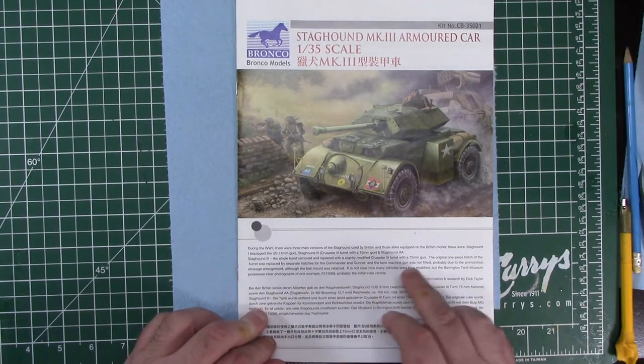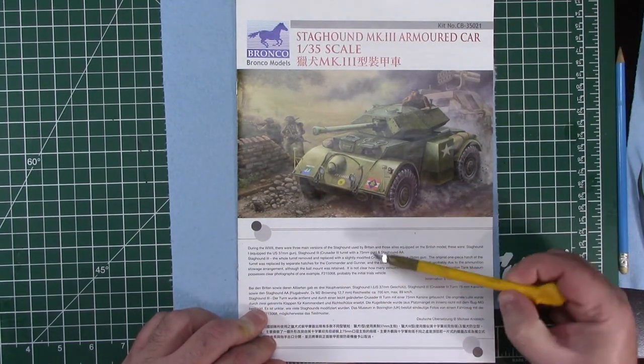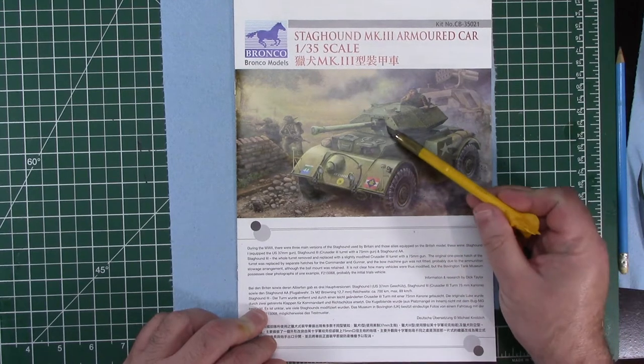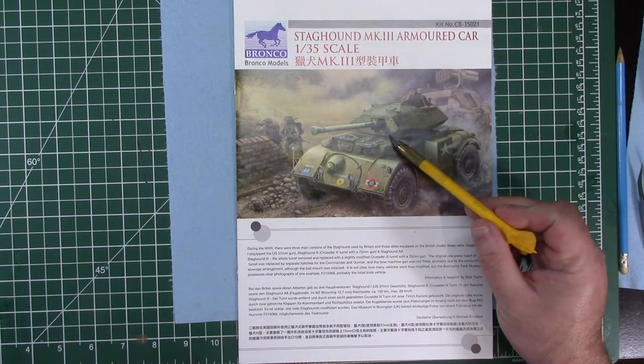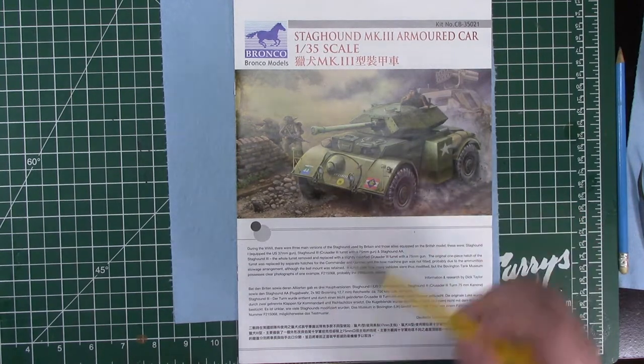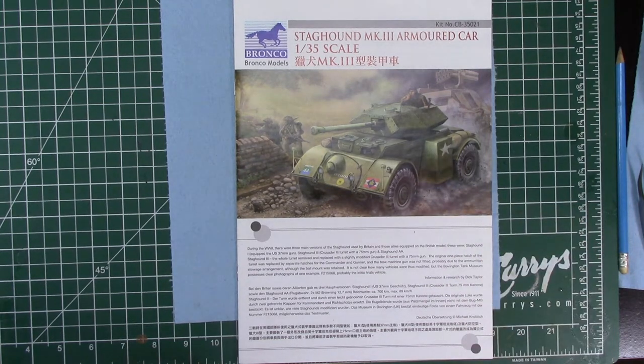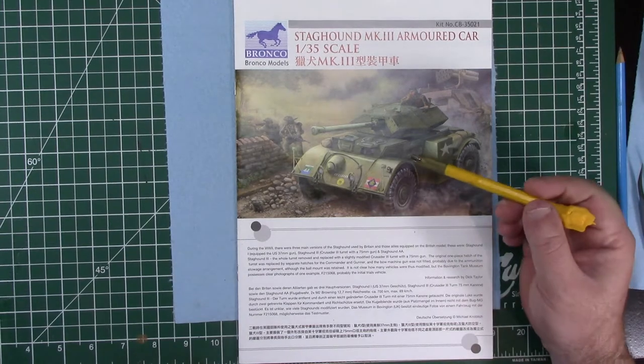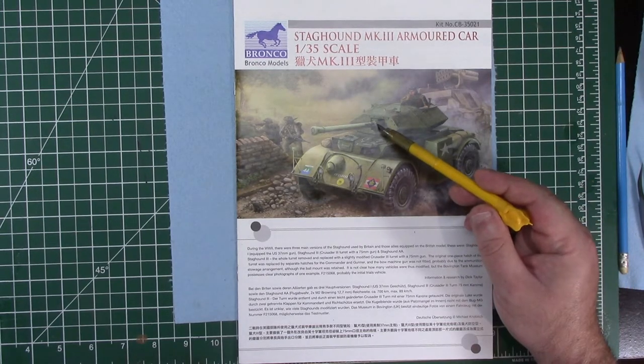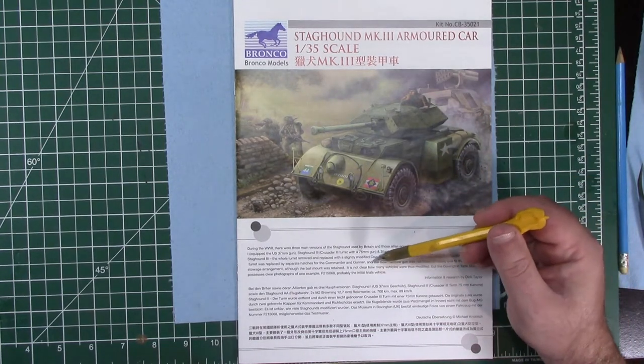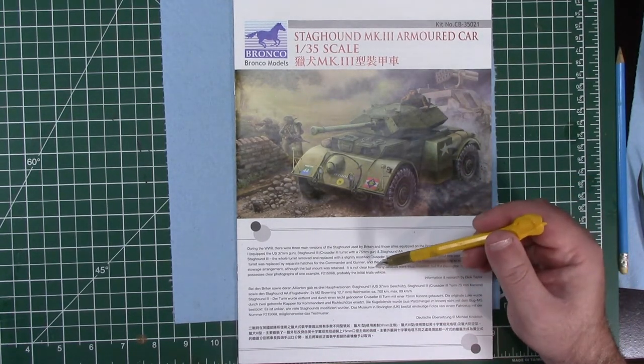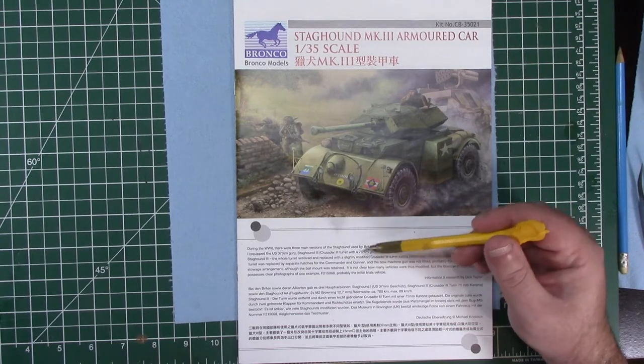There's the normal information and quite obviously to look at it, it's a Crusader turret that's being mounted on a Staghound, and apparently somehow they fitted a 75mm, they probably needed a 6 pounder into the turret. According to their little blurb they don't know how many were made but there was at least one.